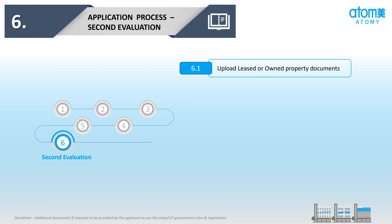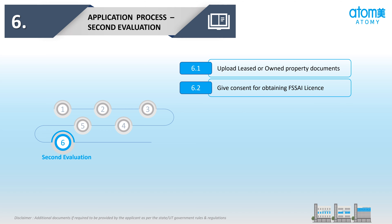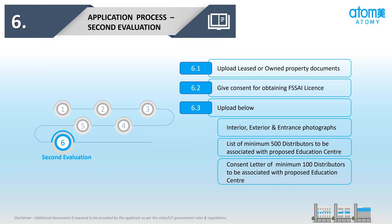छठा Stage है 2nd Evaluation। इस Stage में तीन Sub-Stages हैं: पहली स्टेज - Leased और Owned Property के Documents को Upload करना। दूसरी स्टेज - FSSAI License के लिए Consent देना। तीसरी स्टेज - निम्नलिखित Documents को Upload करना: Interior, Exterior और Entrance की Photos; कम से कम 500 Distributors की List जो Proposed Education Center के साथ Associate होंगे; और कम से कम 100 Distributors के Consent Letters जो Proposed Education Center के साथ जुड़ना चाहते हैं।